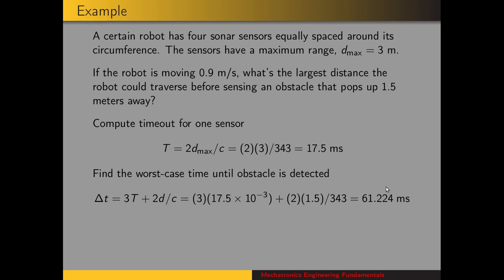So in theory, it could take up to 61 milliseconds for the robot to detect an obstacle a meter and a half in front of it. And if the robot has been moving during this time, then the total distance traveled would be V times that delta t, which is 0.9 meters per second times 61 milliseconds, or 55 millimeters.